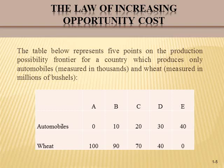the difference between 100 and 90, which is 10 million bushels of wheat. If the economy is at point B, the opportunity cost of an additional 10,000 automobiles — the difference between B and C — is equal to 20 million bushels of wheat. If the economy is at point C, the opportunity cost of an additional 10,000 automobiles equals the difference between C and D, which is 30 million bushels of wheat.